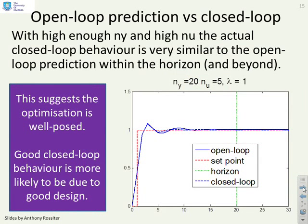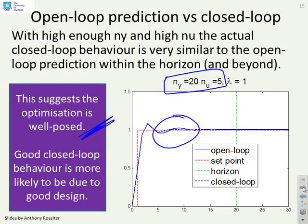Again, if we overlay the open-loop predictions and the closed-loop behavior with some large-ish horizons, you can see there's very little difference between the two. So my optimization is well posed and I can have confidence that I'm going to get good closed-loop behavior.